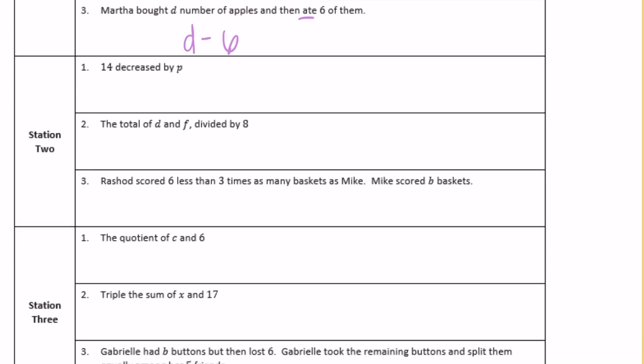Station two, number one: 14 decreased by p. Decreased by tells us that we're subtracting, so we'd have 14 minus p.